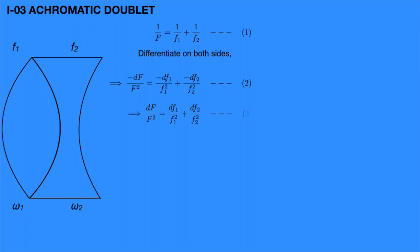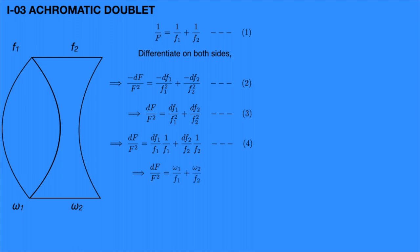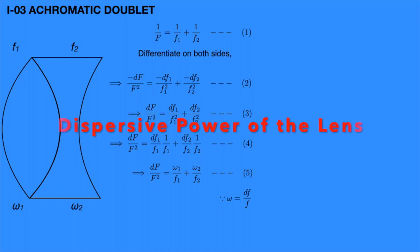Equation 3 can be rewritten as: dF/F² = (df1/f1)·(1/f1) + (df2/f2)·(1/f2). Therefore: dF/F² = omega1/f1 + omega2/f2. Assume this is equation 5. Here omega = df/f is called the dispersive power formula.